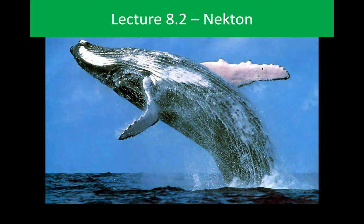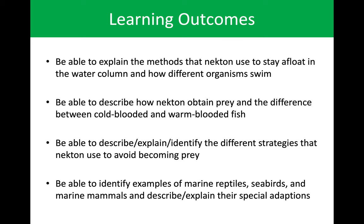That does it for plankton. Now we will continue and move on to nekton. Nekton basically just means anything that is suspended in the water. Learning outcomes for this section: we want to be able to explain the methods that nekton use to stay afloat in the water, describe how they acquire their prey and the difference between cold-blooded and warm-blooded fish, different strategies that nekton use to avoid becoming prey, and a few examples of reptiles, seabirds, and marine mammals and their special adaptations for living in the ocean.